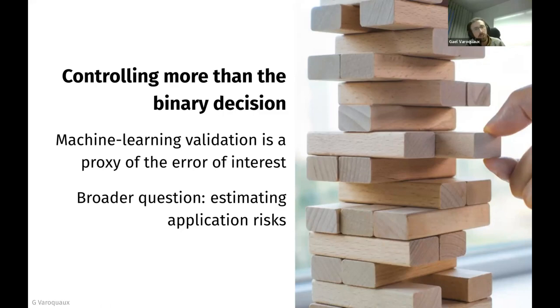Machine learning validation is always a proxy of the error of interest. We want to give the underlying system — whether human or automated — a way of adjusting thresholds.